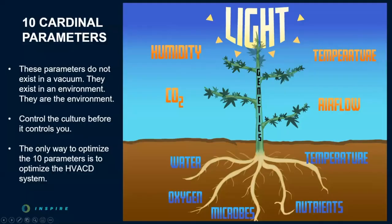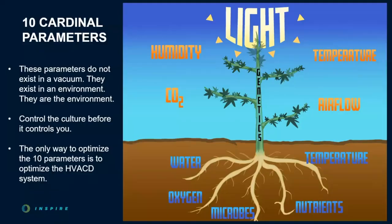The 10 cardinal parameters work synergistically, and all of them need to be optimized to ensure crucial KPIs are met, such as grams per square foot and price per pound. HVACD tells the full story of what environmental control for cannabis should do. There's heat load from the lights that needs to be accounted for, but it takes about twice as much work to dehumidify than it does to remove heat. Through the process of transpiration, plants act as perfect little humidifiers in cultivation rooms, and without proper modulating dehumidification, humidity rates and VPD simply cannot be maintained.